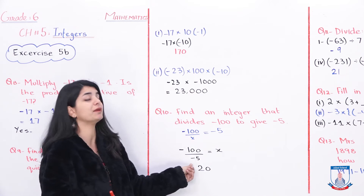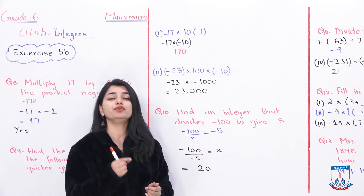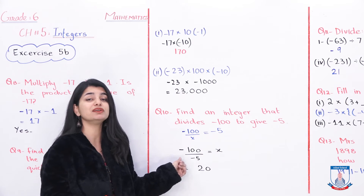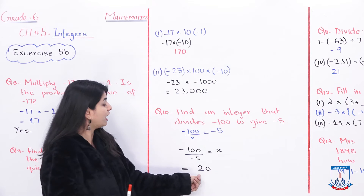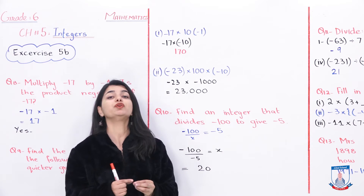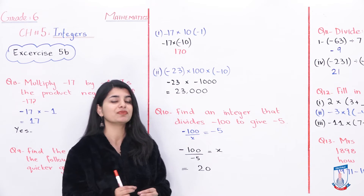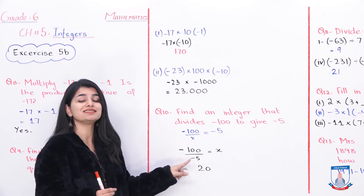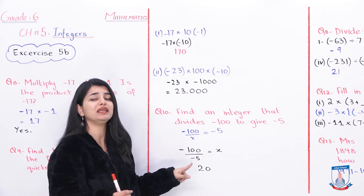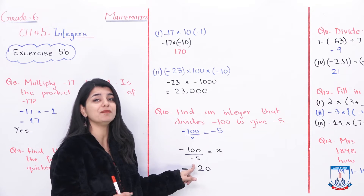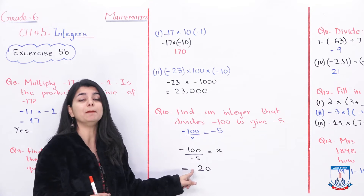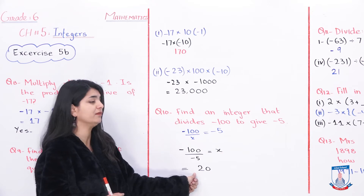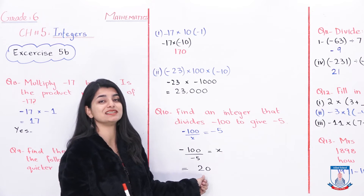Divide 100 by 5. Take a minute, do this in your notebook. The answer is 20. Now determine the sign: we have negative and negative — like signs. When like signs are divided, they become positive. So the answer is positive 20.